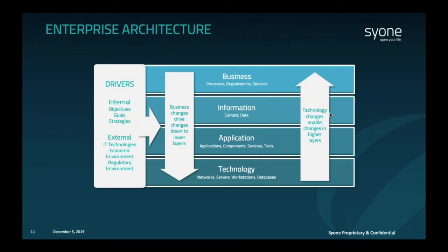There are several types of drivers affecting the current status and future of your architecture. Both internal and external factors may play a role in influencing the future of a company's enterprise architecture. For example, if a company decides to expand its operations to a new geography, there will be a deep impact on the enterprise architecture. Also, if it decides to move infrastructure from on-premise to cloud adoption, there will also be a deep impact on the enterprise architecture.